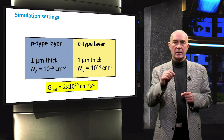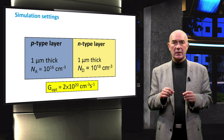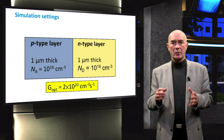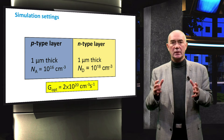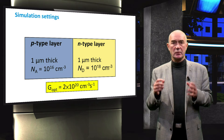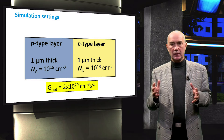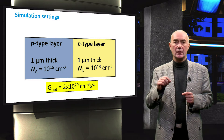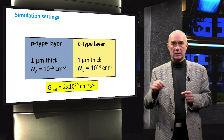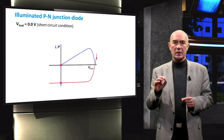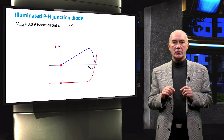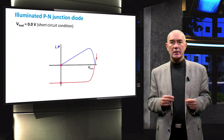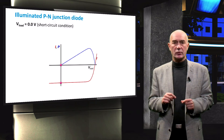Simulations were used to examine band diagrams of an illuminated PN junction diode based on crystalline silicon operated at different voltage drops at a load. We will use the same parameters in simulations that we used in previous videos. Additionally, we will add a uniform generation rate of 2 times 10 to the power of 20 carriers per cubic centimeter per second. When a load is connected between the electrodes of an illuminated PN junction, we can manipulate the operating point of a solar cell by varying the resistance of the load and corresponding voltage drop at the load.